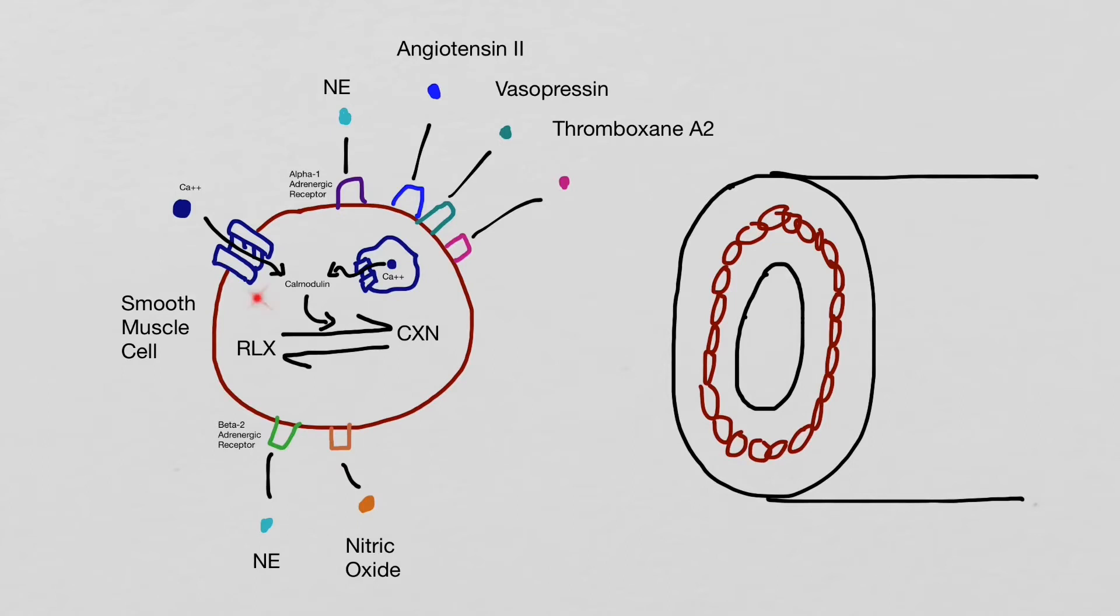And again, these chemicals would cause relaxation of the smooth muscle. Relaxation of the smooth muscle in a tube would cause dilation of the lumen. This dilation found in a blood vessel would increase the blood flow.